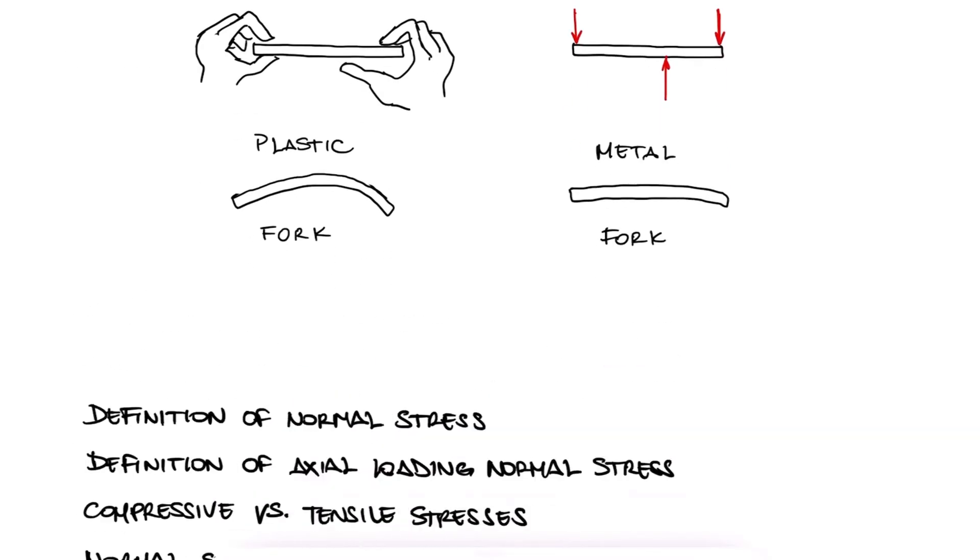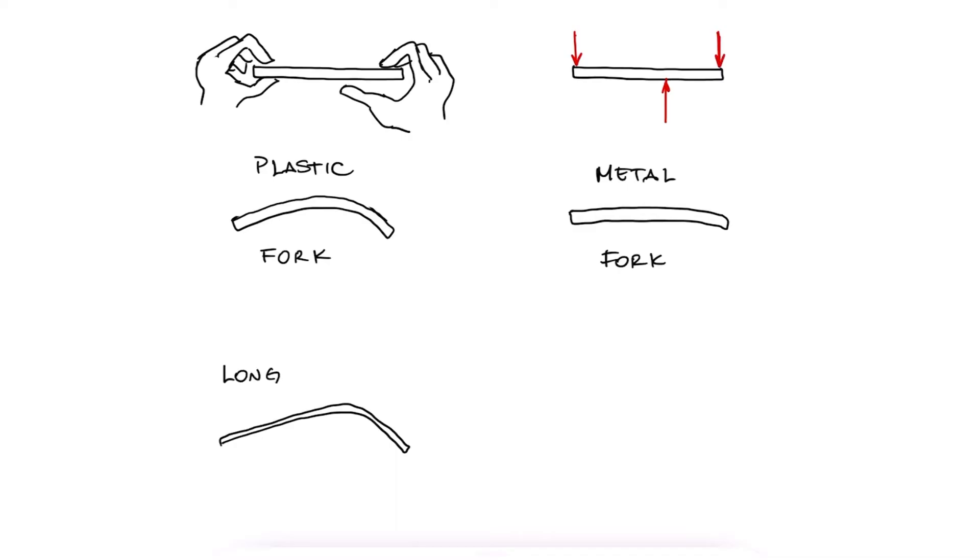Similarly, the same load can noticeably bend a long and skinny fork and hardly bend a short and thick one. So again, overall deformation, or any strain-related metric in general, is not about the force, load, moment, or torque only.